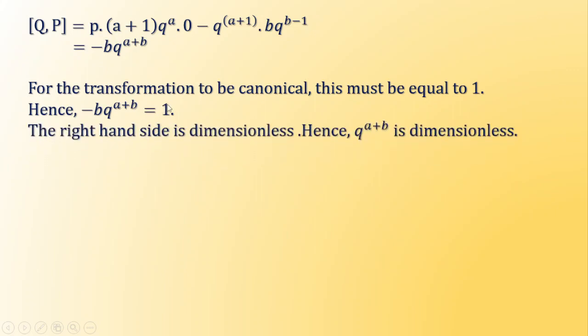Here we can see that the right-hand side is dimensionless. Hence q^(a+b) is dimensionless. Therefore, q^(a+b) is dimensionless when a+b = 0. So we get a = -b.